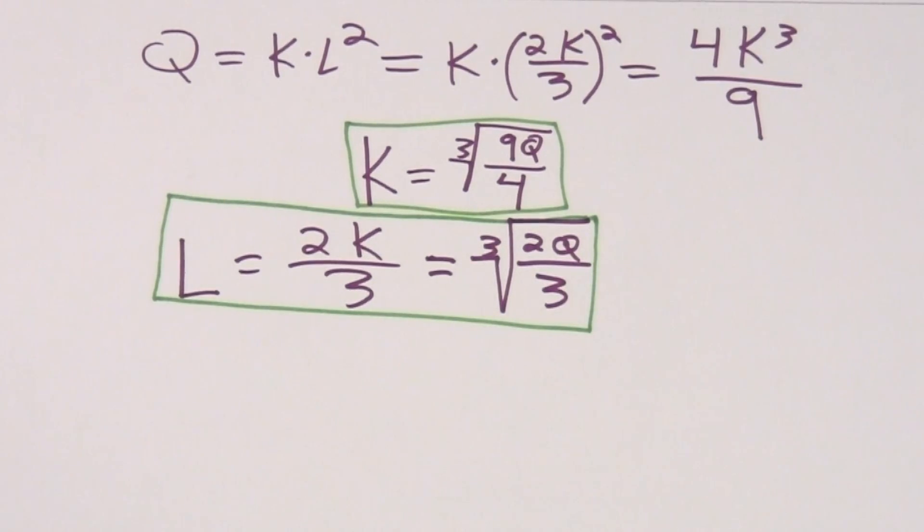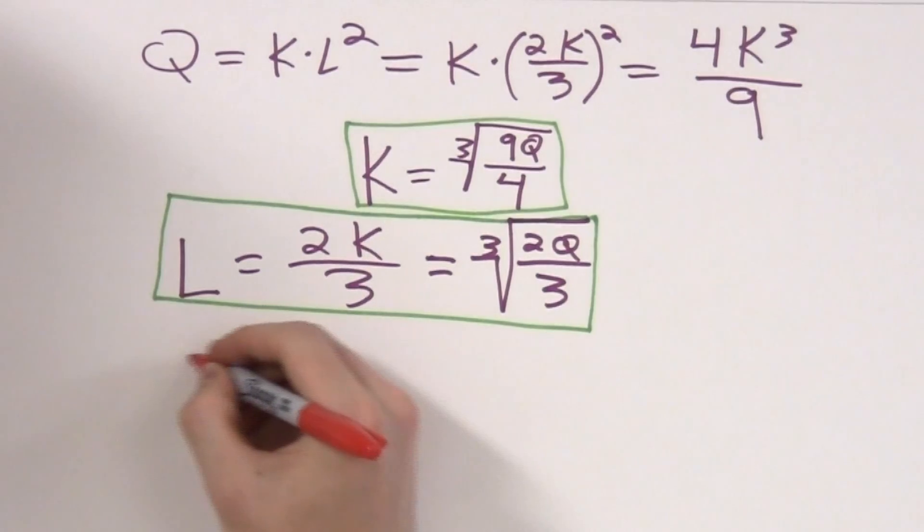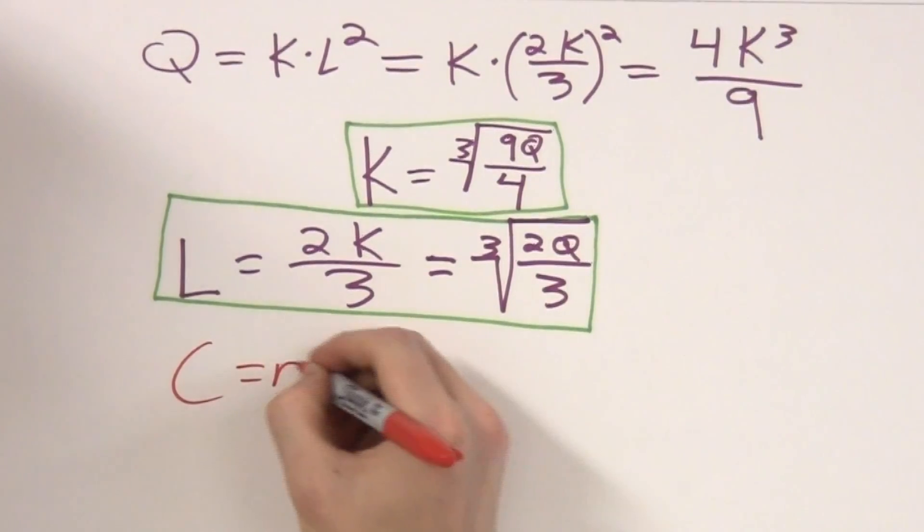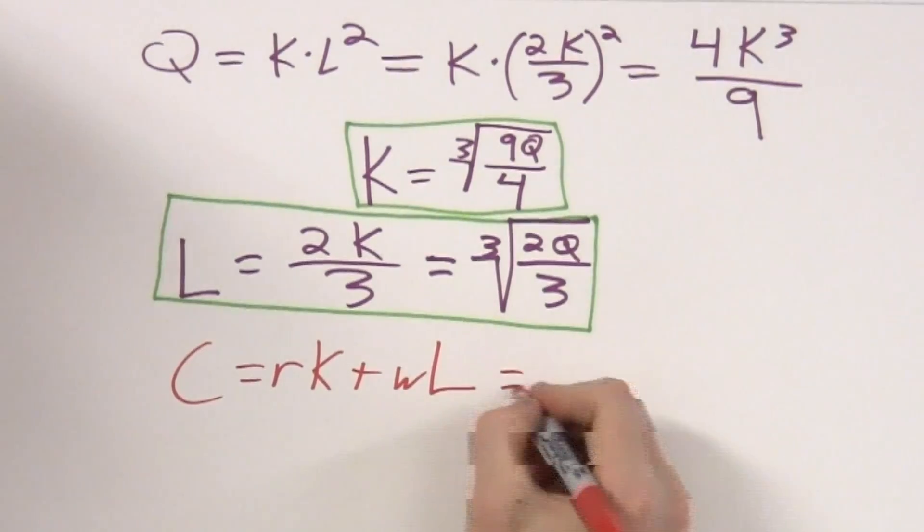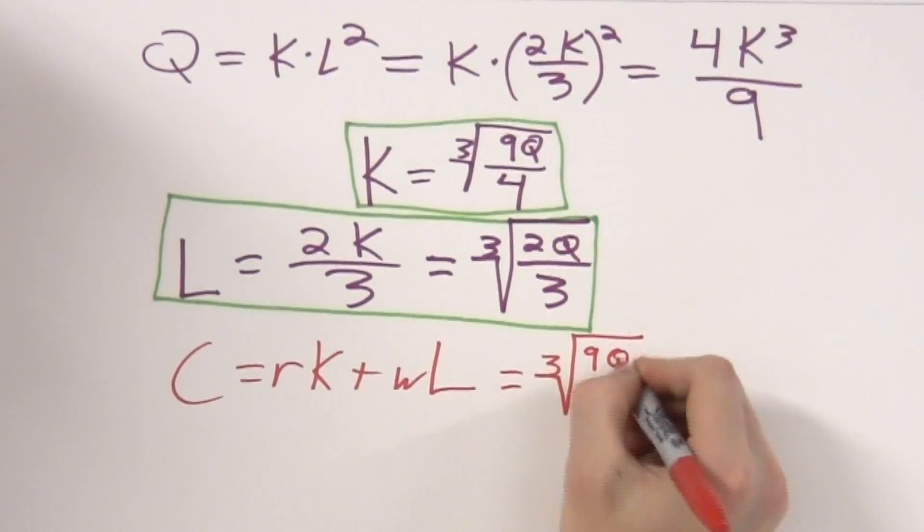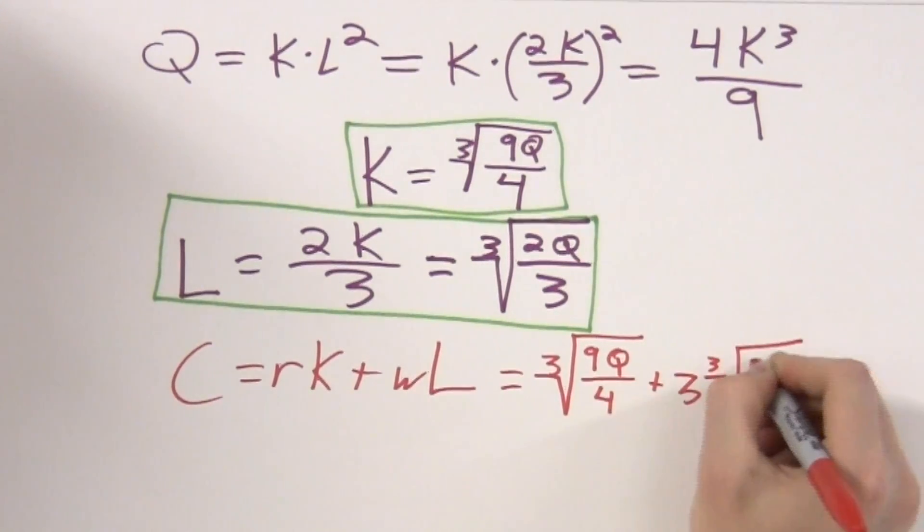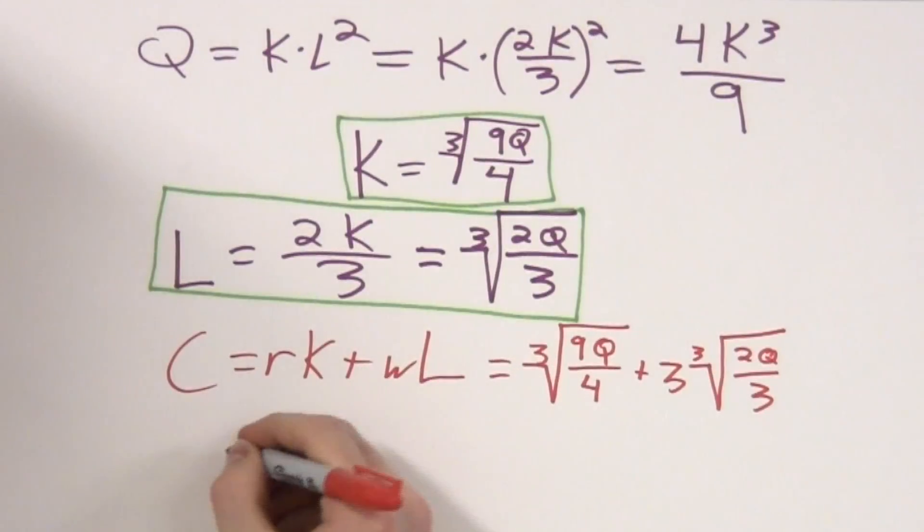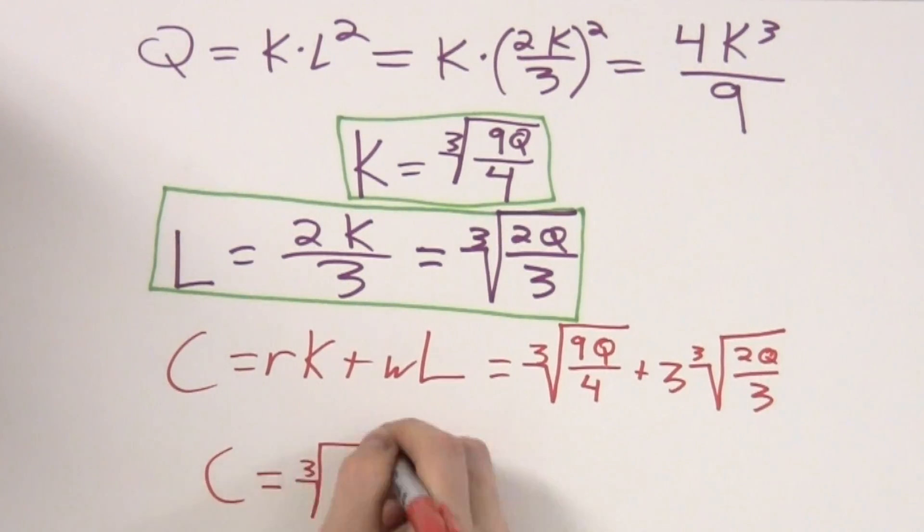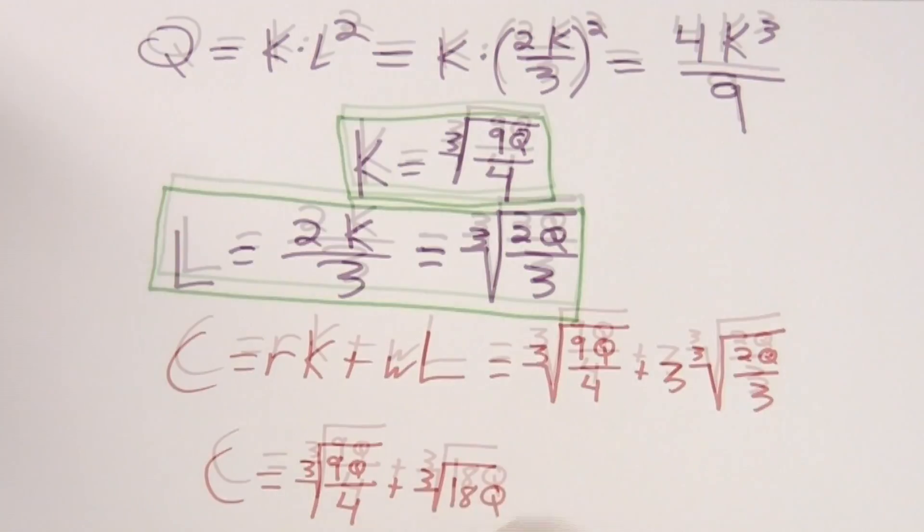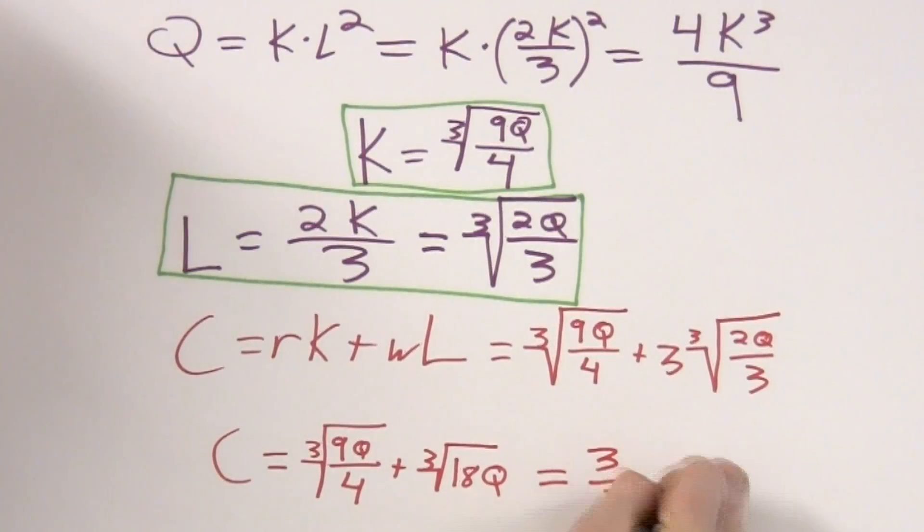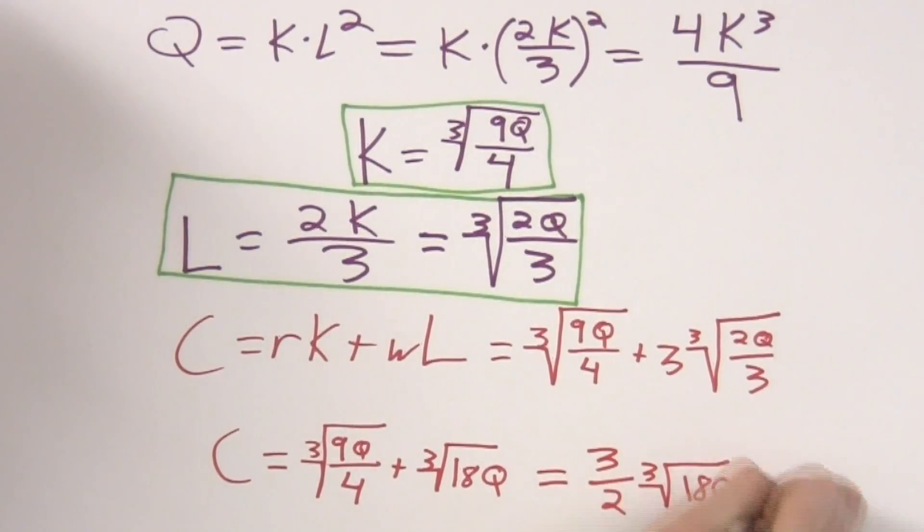We can substitute these values for k and l into our cost function, c equals rk plus wl. Doing so, we get the cube root of 9q over 4 plus 3 times the cube root of 2q over 3. We can simplify this to the cube root of 9q over 4 plus the cube root of 18q. Adding these together, we get that our overall cost is 3 halves times the cube root of 18q.